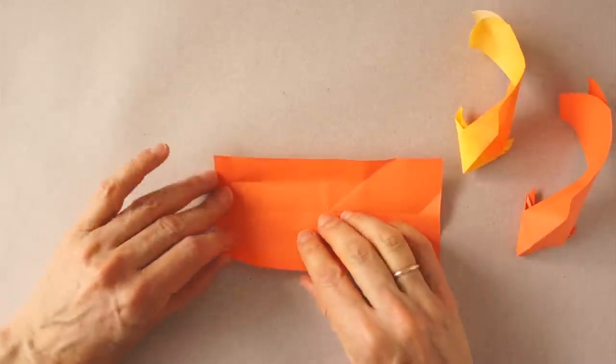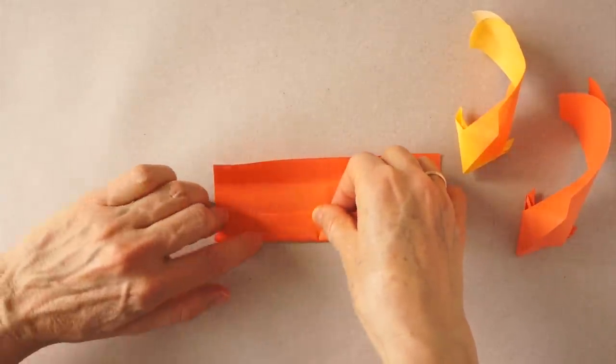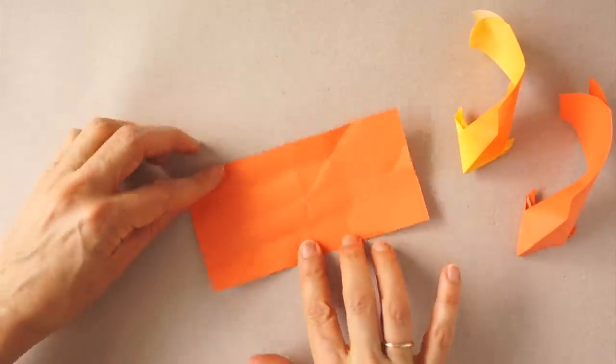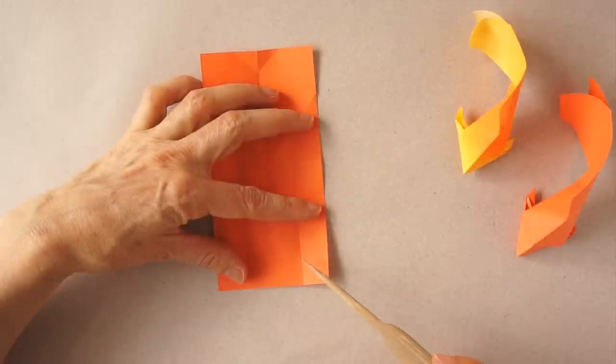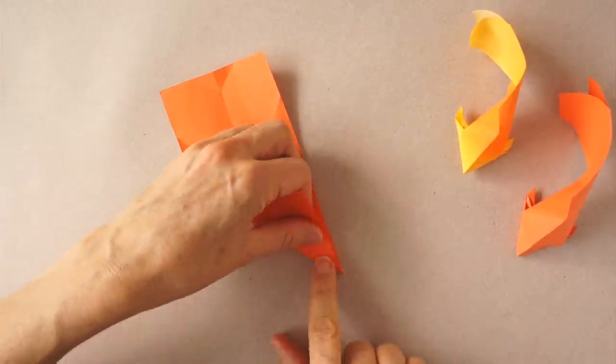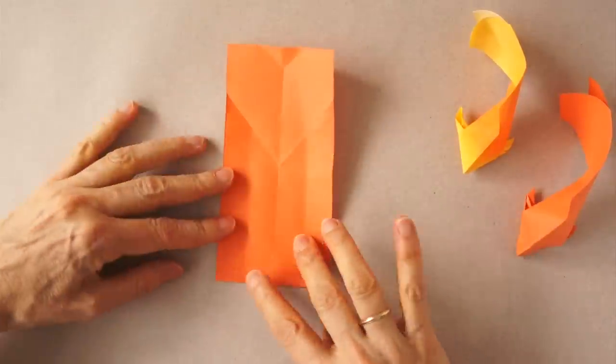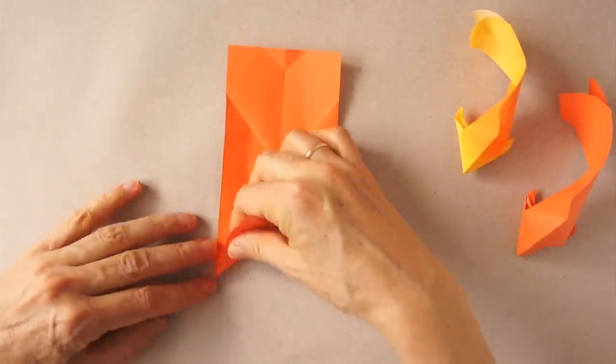Rotate and repeat. Now we are going to make a fold from here to the corner. Same here. Same here.